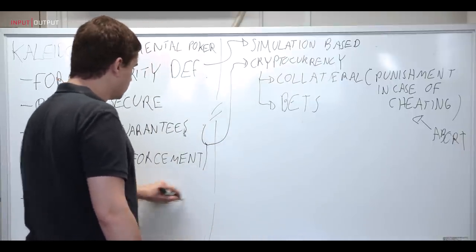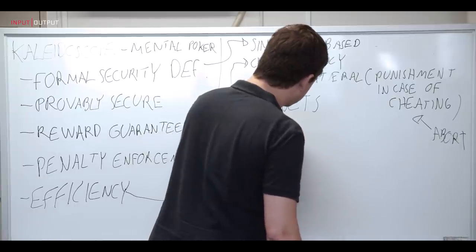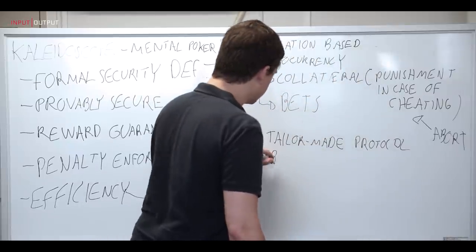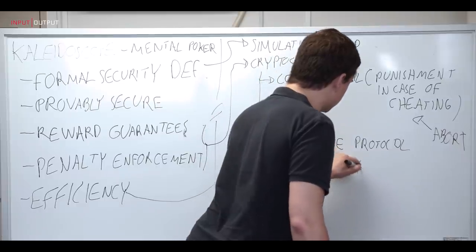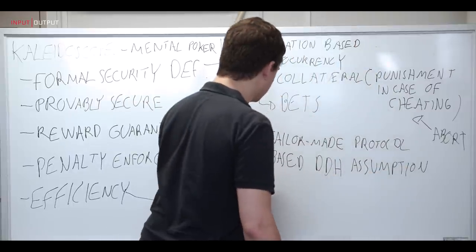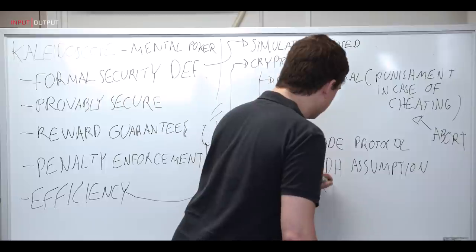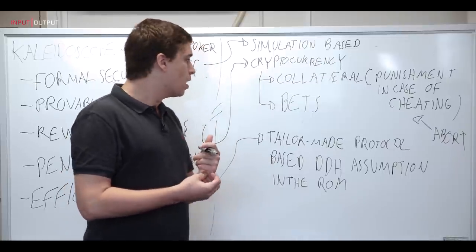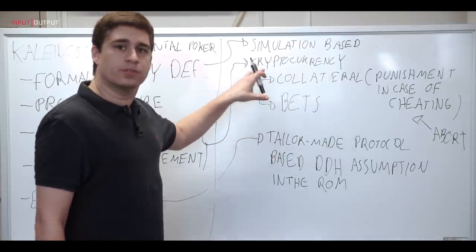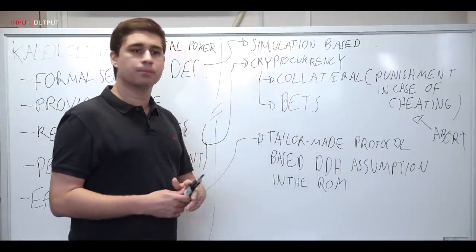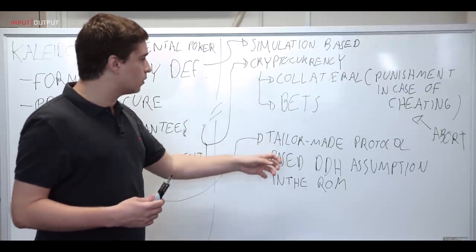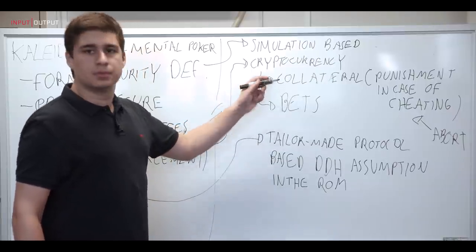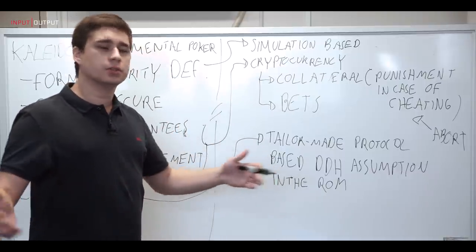Now, in order to get efficiency, we construct a tailor-made protocol that is based on the popular DDH assumption in the so-called random Oracle model. This allows us to achieve a protocol that has much more efficiency than protocols that compute any program while making it compatible with the mechanisms, the cryptocurrency mechanisms that we use to guarantee collateral payments and bet payments. So our protocol will basically determine, the output of the protocol will determine how the bet money that's deposited is distributed and also who is deemed a cheater and gets their collateral money withdrawn and distributed among the honest players.